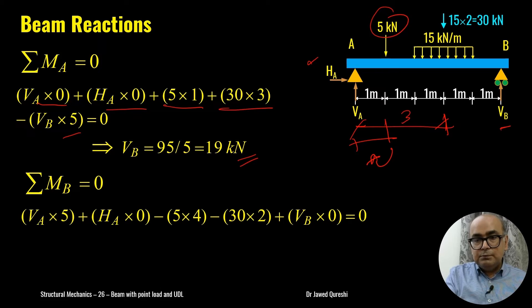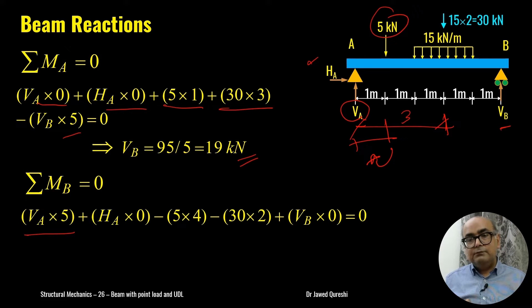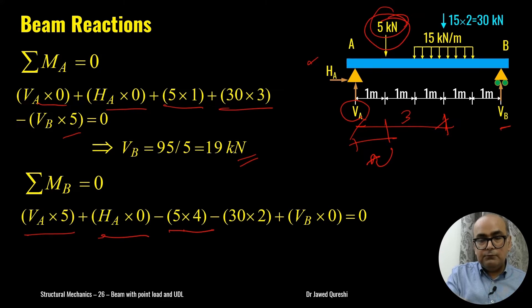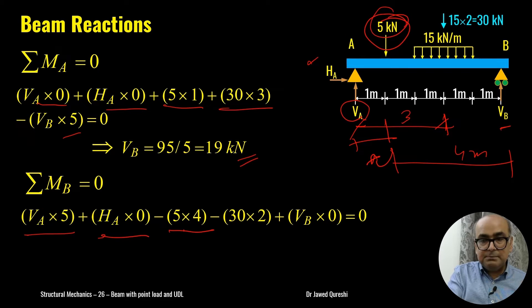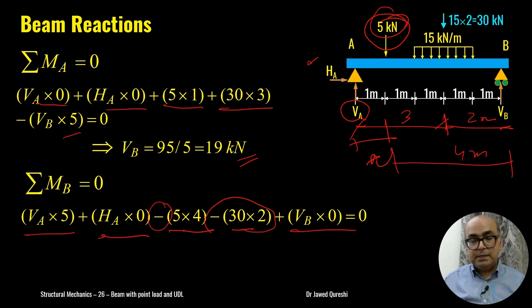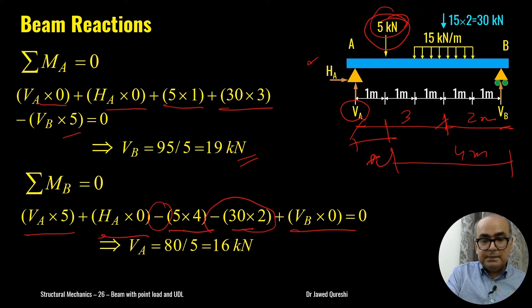Taking ΣM at B = 0: Va×5 is clockwise (positive). Ha creates no moment as it acts in the same line. The 5 kN load is 4 m from B — anti-clockwise: −5×4. The 30 kN UDL resultant is 2 m from B — anti-clockwise: −30×2. Vb×0 = 0. Solving gives Va = 16 kN.